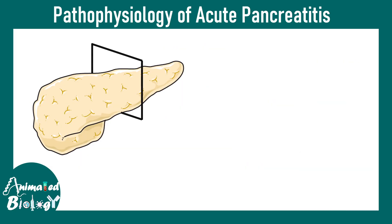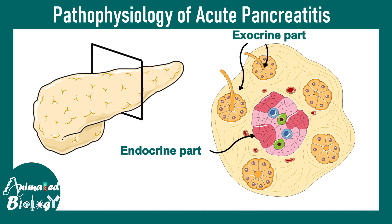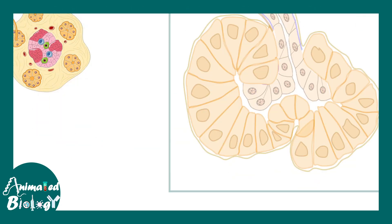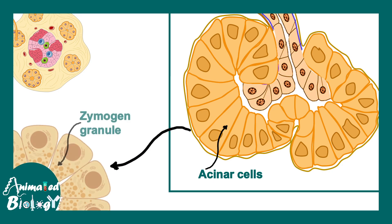Here is the pancreas — if we cut a cross-section we can see the endocrine part and the exocrine part, which secretes digestive enzymes. Within the exocrine part there are pancreatic acini. These acinar cells secrete several digestive enzymes which go to the pancreatic acinar duct and are released into the digestive tract. There are zymogen granules present in these acinar cells, and all these enzymes are secreted in a premature or inactive format.